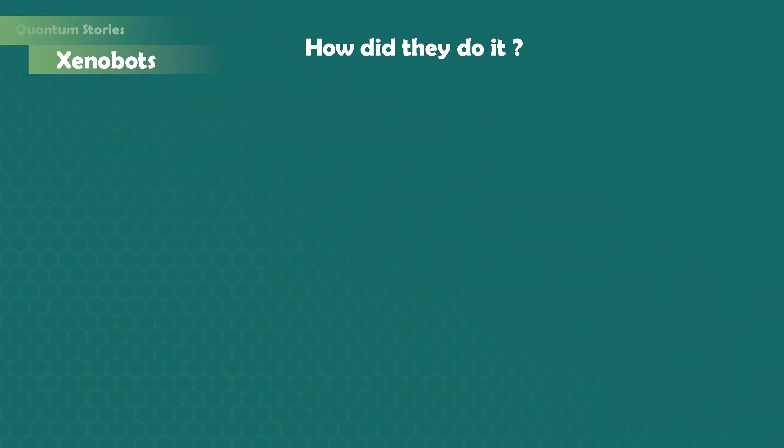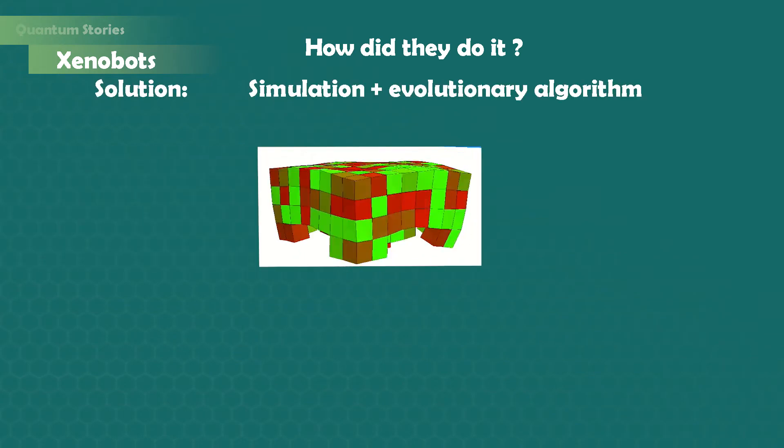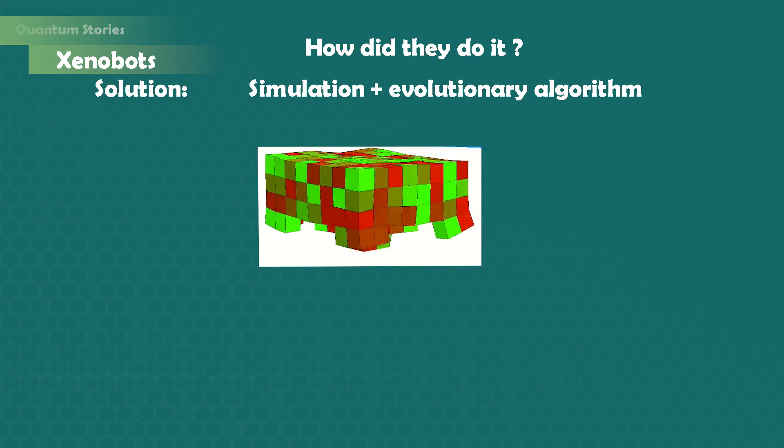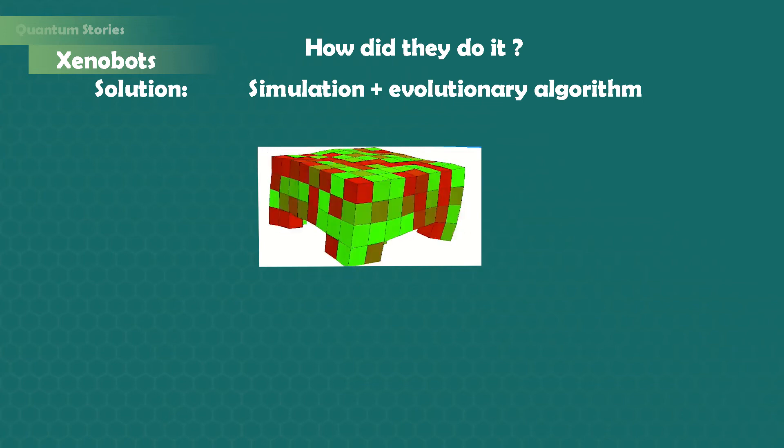The researchers did two things. First, they used simulation, a supercomputer that simulates how cells interact together by respecting the rules about biophysics. This avoids you to do things in real life and does this much faster.